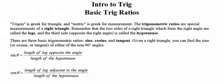A little bit on the anatomy of the right triangle. Remember that the two sides that form the right angle in a right triangle are the two legs. We know they're legs because they include the right angle in the triangle. The side opposite the right angle is always referred to as the hypotenuse.